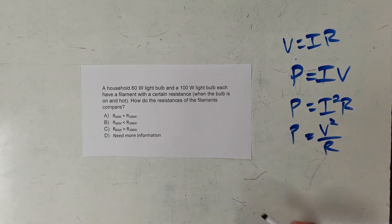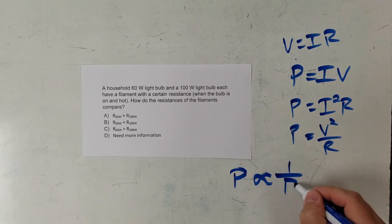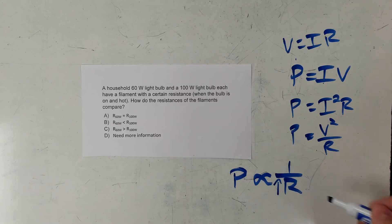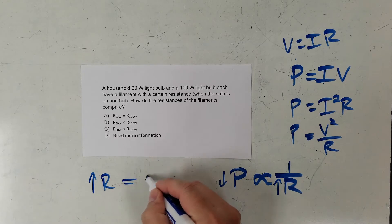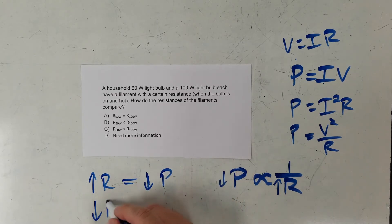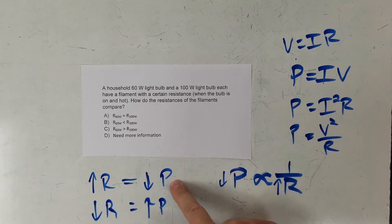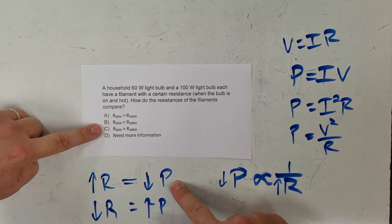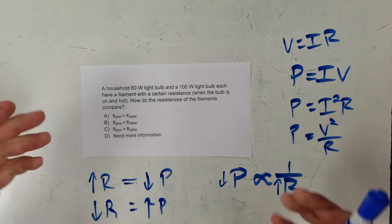If I keep voltage the same, power is proportional to 1 over resistance. So big resistance gives small power, and small resistance gives big power. That means the bulb with smaller power will have bigger resistance. My 60-watt bulb has smaller power, so it has bigger resistance — the resistance of the 60-watt bulb is greater than the 100-watt bulb.